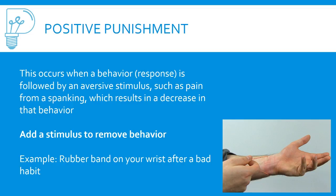Positive punishment occurs when a behavior is followed by an aversive stimulus, such as pain — adding a negative stimulus to remove a behavior. For example, if you're trying to stop swearing or smoking, you can put a rubber band on your wrist and snap it whenever you do it. It won't be detrimental to your health, but it will hurt. After a while, your brain will rewire itself to decrease that behavior.